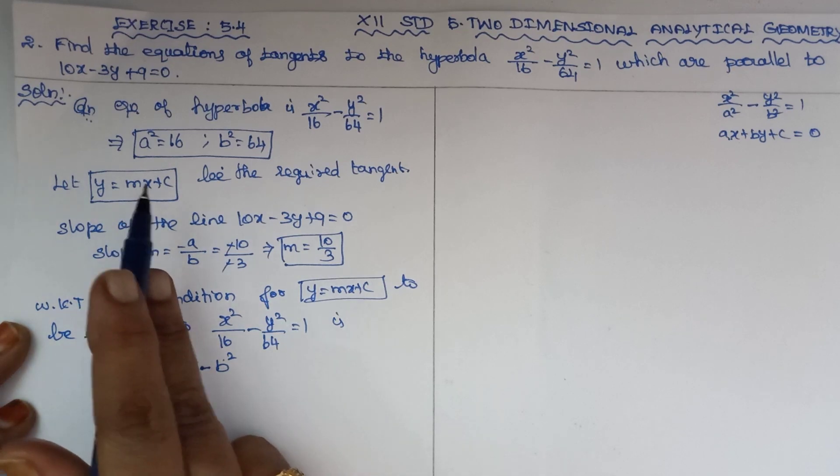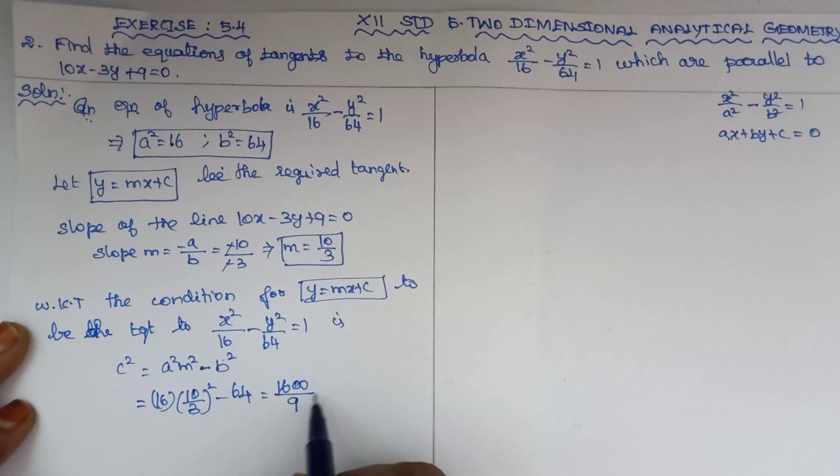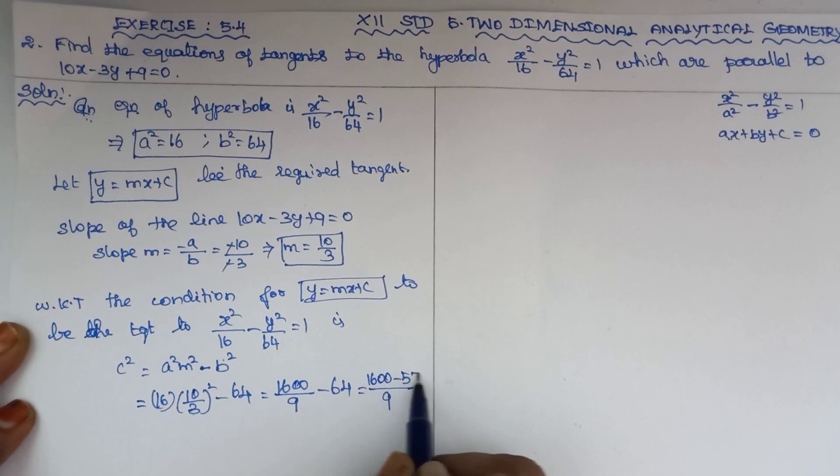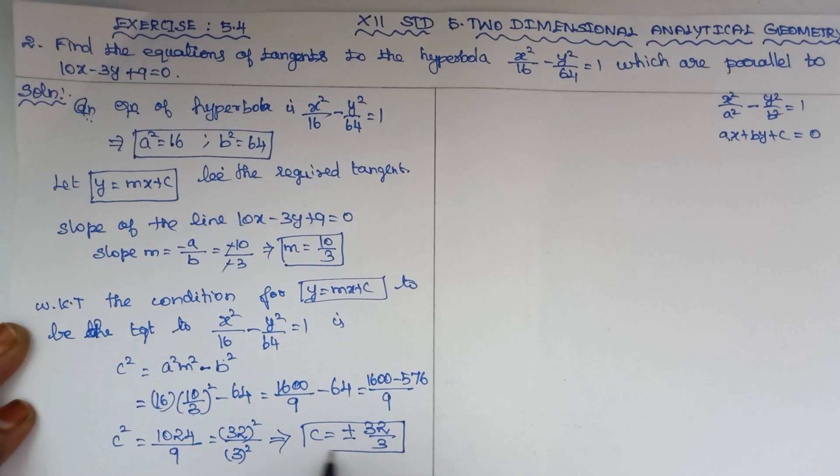C square equals a square, which is 16, times m square. M is 10 by 3, so square it: 10 by 3 the whole square, minus b square which is 64. Simplifying: 16 times 100 is 1600 divided by 3 square which is 9. 1600 minus 576 gives 1024 divided by 9. This is 32 square by 3 square, so 32 square is 1024. Left side is C square. Taking square root on both sides, C equal to plus or minus 32 by 3.